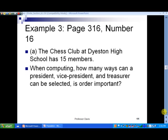So, in slide number 11, let's see if order is important here. In part A, it says the chess club at Dyeston High School has 15 members. When computing, how many ways can a president, a vice president, a treasurer be selected? In other words, is order important here? So, notice in this case,